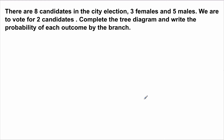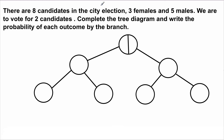Now let's look at this example. There are eight candidates in the city election — three females and five males. We are to vote for two candidates and we want to use a tree diagram to find the probability of each outcome. For the first selection, we can select a female or a male. The probability of selecting a female is 3 out of 8 candidates, and the probability of selecting a male is 5 out of 8.